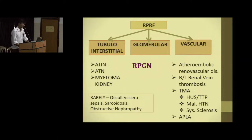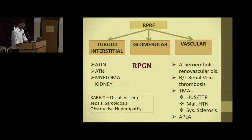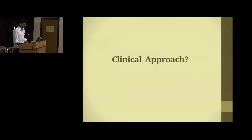RPRF can be due to vascular, glomerular, or tubulointerstitial causes. Acute tubular interstitial nephritis, acute tubular necrosis, and myeloma kidney are tubulointerstitial causes. Among glomerular causes we have RPGN. Vascular causes include thromboembolic disease, bilateral renal artery or vein thrombosis, and thrombotic microangiopathy such as HUS, TTP, and APLA.